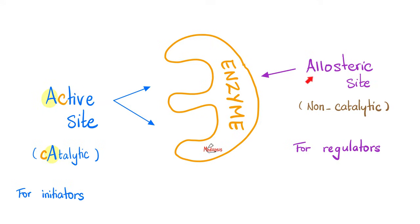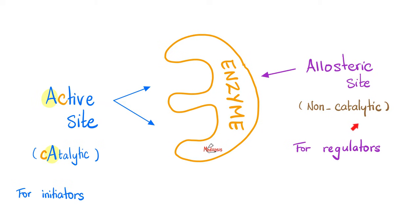By the way, what does the word 'allo' mean? It means different — stereochemically different from the active site — i.e., back door versus front door. The front door is for initiators, the back door is for regulators. If you have a restaurant, the customers should come from the front door. The government regulators and public health officials should enter through the back door.